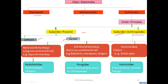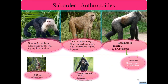Hominoidea shows three families. The first family is Hylobatidae, which includes the arboreal apes like gibbons. The second family is Pongidae — these animals are semi-arboreal, including gorilla, chimpanzee, and orangutan. The third family is Hominidae, which includes human beings.